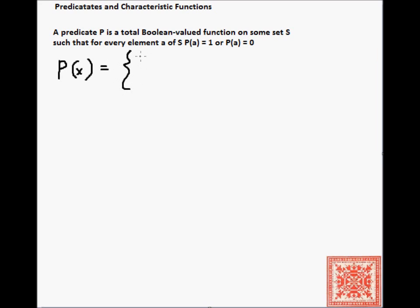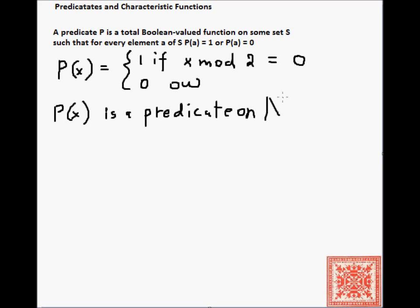Here's an example. p of x is 1 if x modulo 2 is equal to 0, or the number x is even, or 0 otherwise. Then p of x is a predicate on the set of natural numbers, because for every natural number, p returns either 1 or 0.